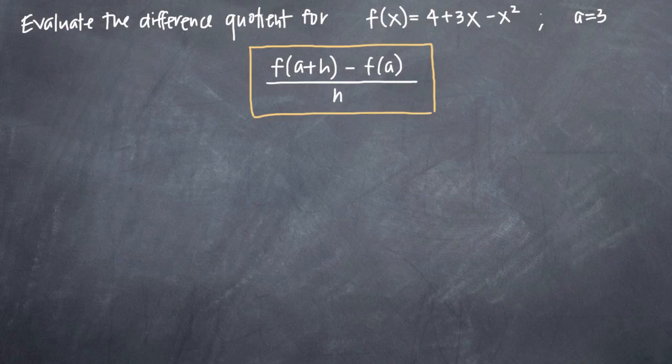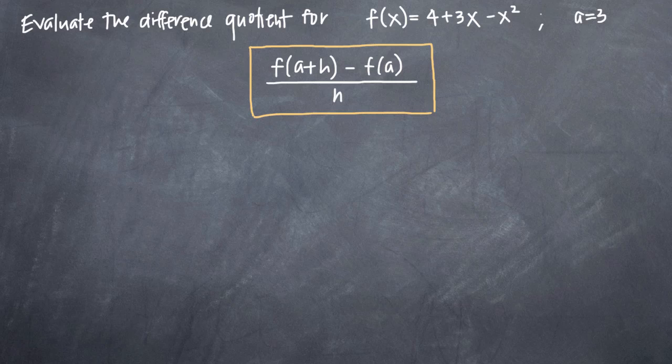In this particular problem, we've been given the function f(x) = 4 + 3x - x² and asked to evaluate the difference quotient for this function when a = 3. Some textbooks will write this when x = 3 and show the difference quotient formula as [f(x+h) - f(x)]/h. Either way, it means the same thing and you're still using the same formula.